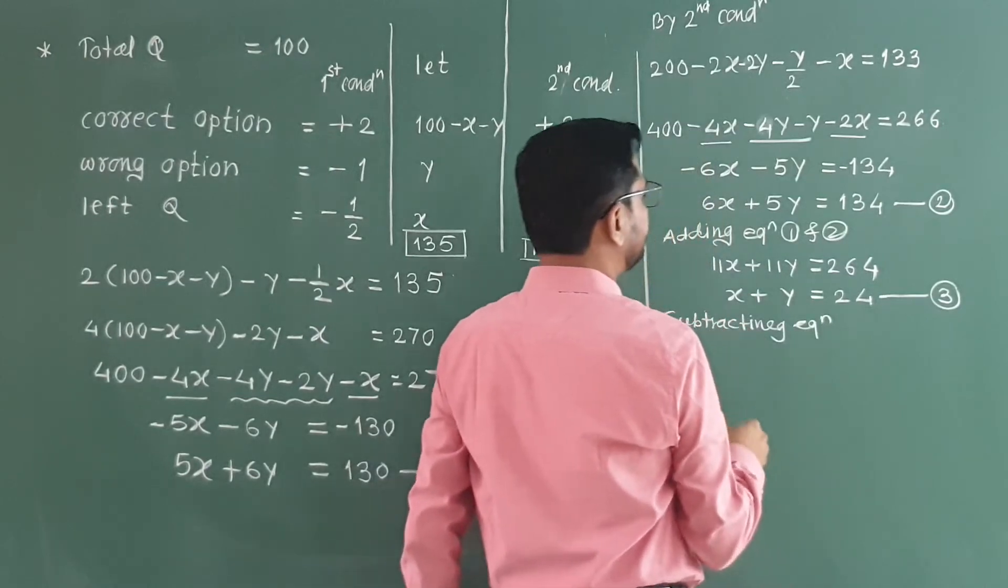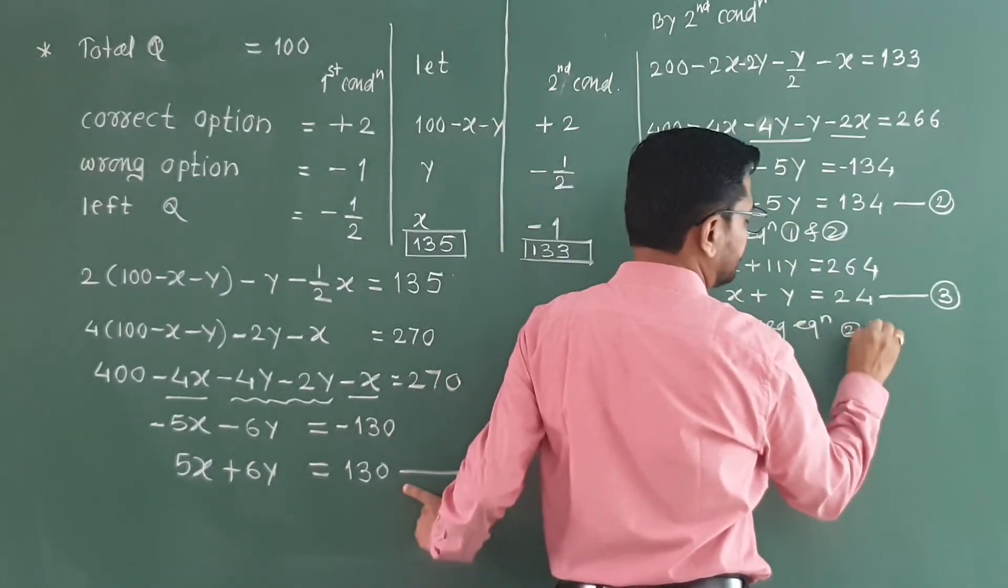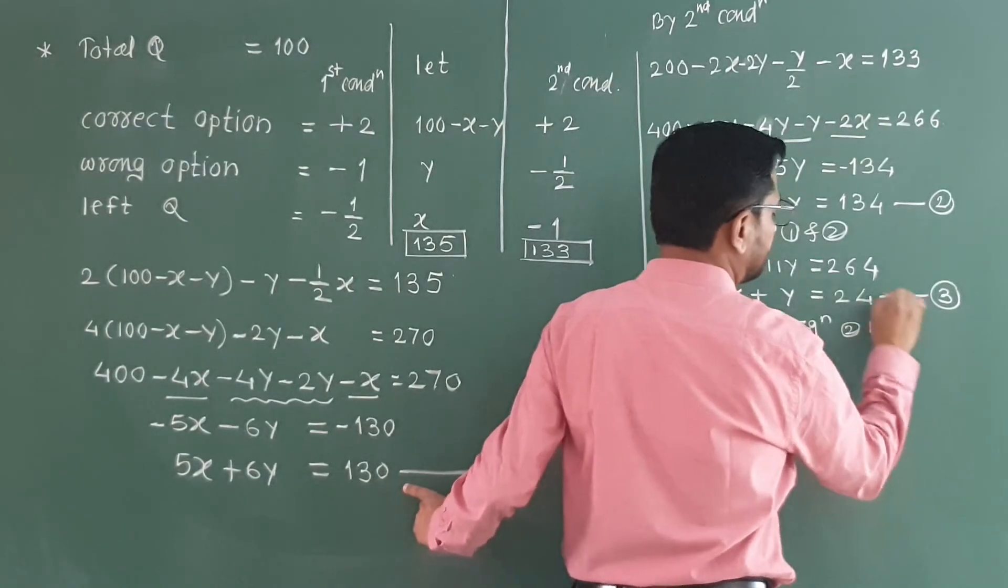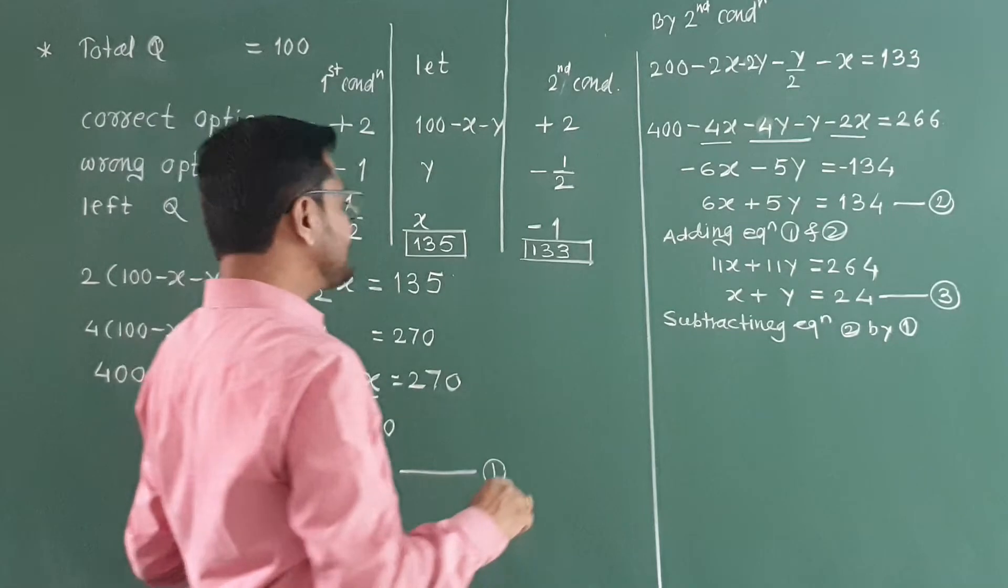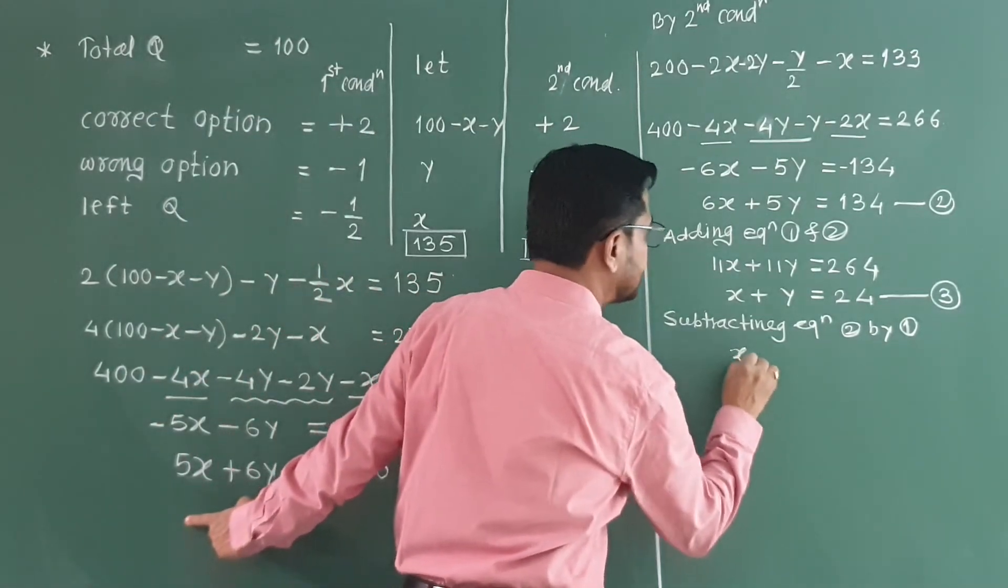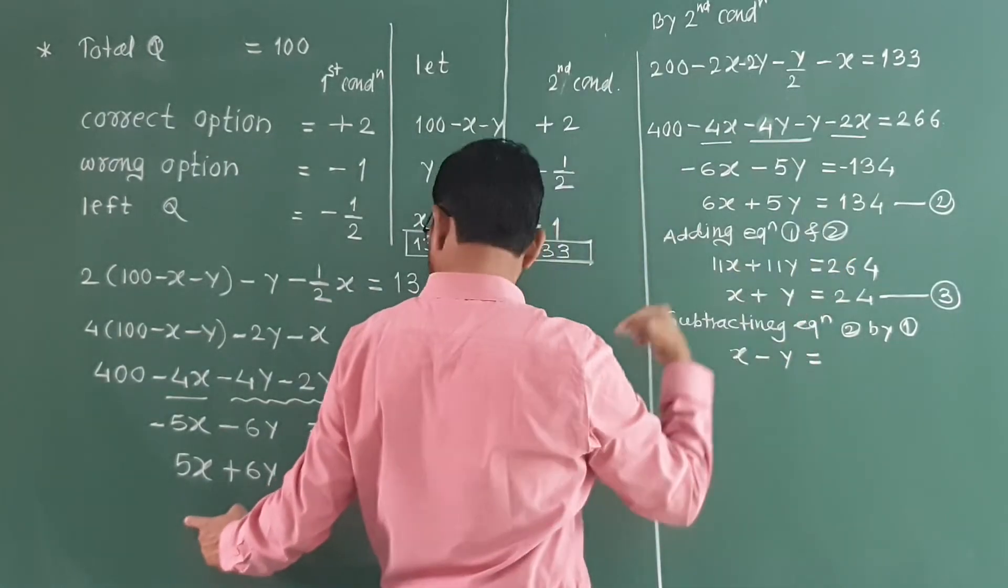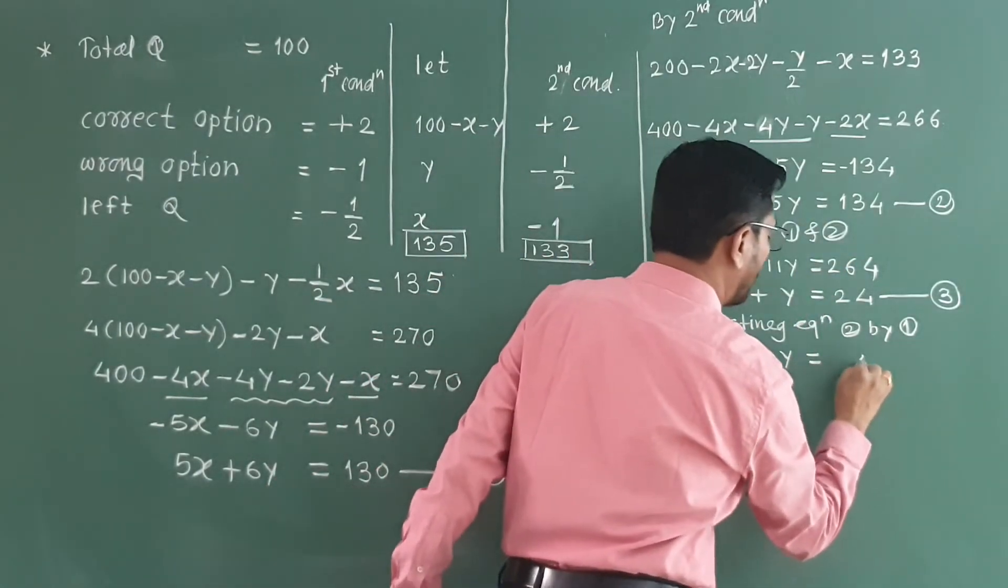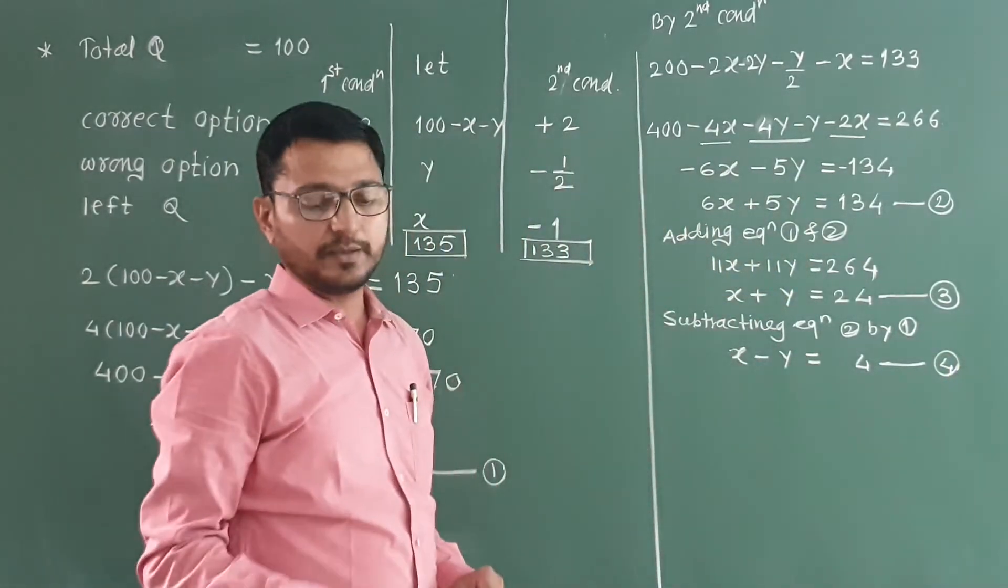Subtracting equation 2 from equation 1, we get 6y minus 5y, which is y, is equal to 110. Wait, 11y is equal to 110, so y equals 10.